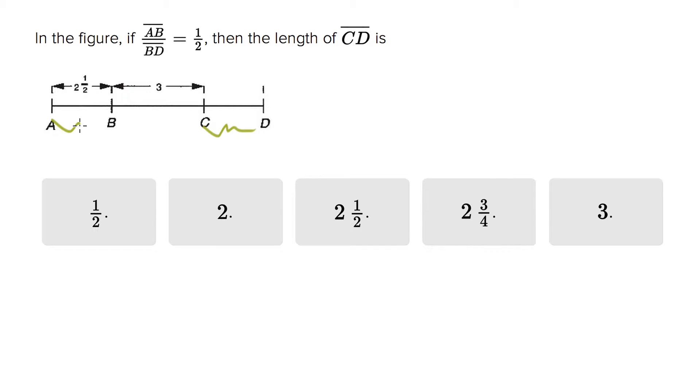We're told that the ratio of AB to BD is 1 half. So BD must be double AB. Right, we know AB is 2 and a half, so BD must be equal to 2 times 2 and a half, which is equal to 5.